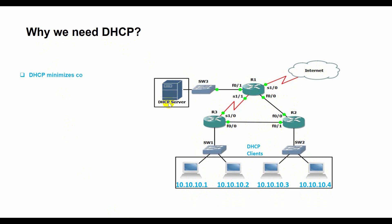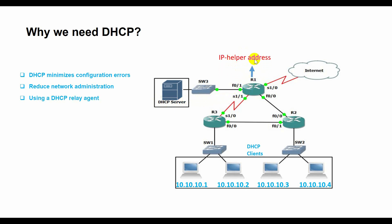DHCP minimizes configuration errors such as typographical errors and prevents address conflicts between two computers. It reduces network administration through centralized and automated configuration, and enables efficient handling of IP address changes for portable devices that move to different locations on a wireless network. Using a DHCP relay agent eliminates the need for a DHCP server on every subnet.